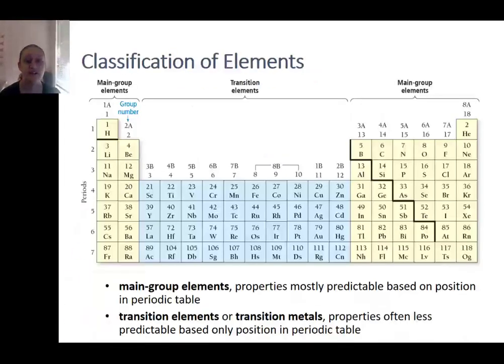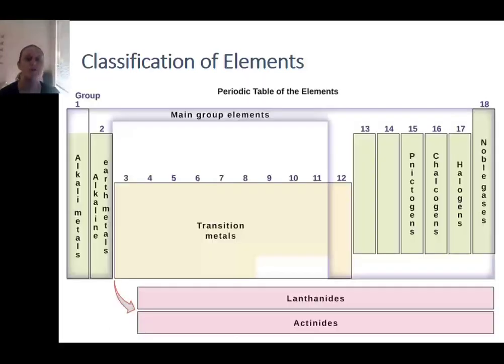Another way of classifying the elements is by their blocks. Main group elements are at the ends of the periodic table and these tend to have properties that are quite predictable, such as the ions we saw in the last slide. Transition elements in the center are often less predictable, and we will see more about these in the future. Many of the groups in the periodic table also have specific names. We will see more about the most common groups and the ones that you should know on the next few slides.